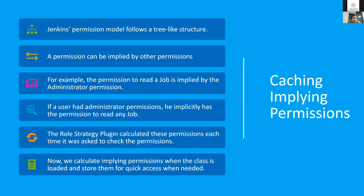The other change was to cache implying permissions. The permission model used by Jenkins follows a tree-like structure, so one permission can imply another. For example, the administrator permission implicitly gives the user permission to read any job. Role Strategy plugin used to calculate all of these implying permissions every time it performed a permission check. Now, to improve speed, we cache the set of permissions implied by any given permission. This happens when the plugin is loaded, so it does not waste any time at runtime.